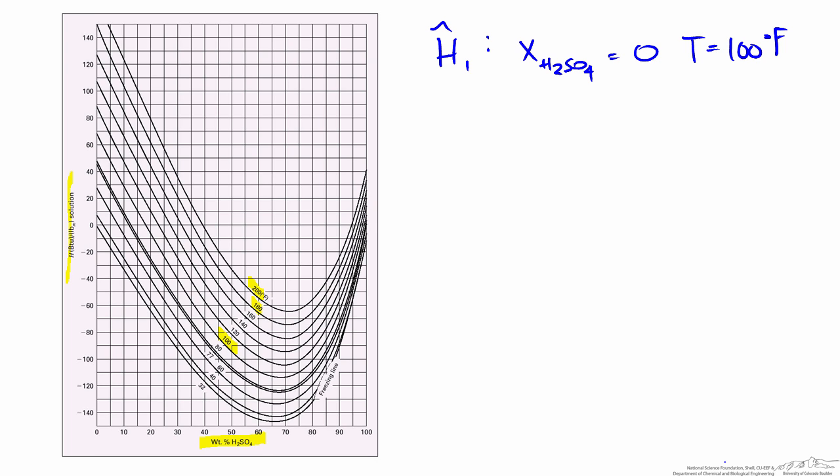Our first stream was pure water, so the mass fraction of H2SO4 is equal to 0, and we're at 100°F on the inlet side. All the way on the left, the mass fraction of H2SO4 is 0 and the isotherm is 100. If we trace this up to x equals 0, we can get a reading for the specific enthalpy at that temperature. We can see it's pretty close to 70, so I'll use a value of 68. The units of specific enthalpy in this case are BTUs per pound of solution.